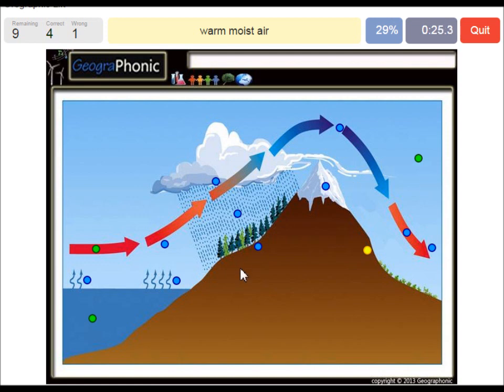Warm moist air is what we see here after the evaporation. This here is the evaporation of the warm ocean water.